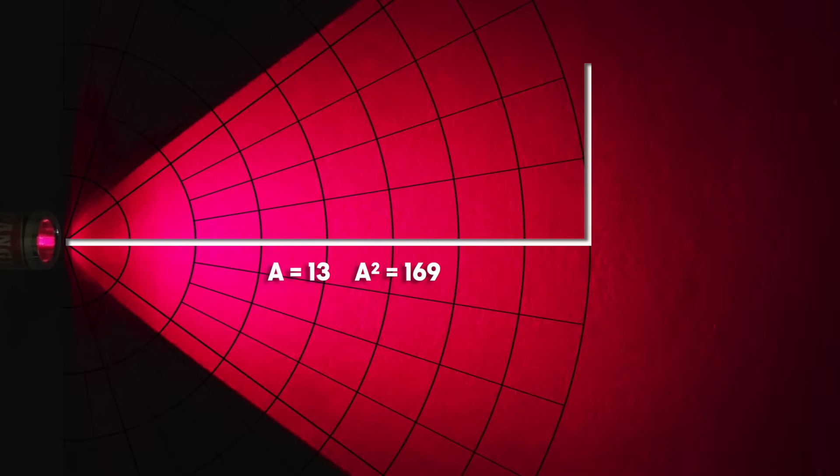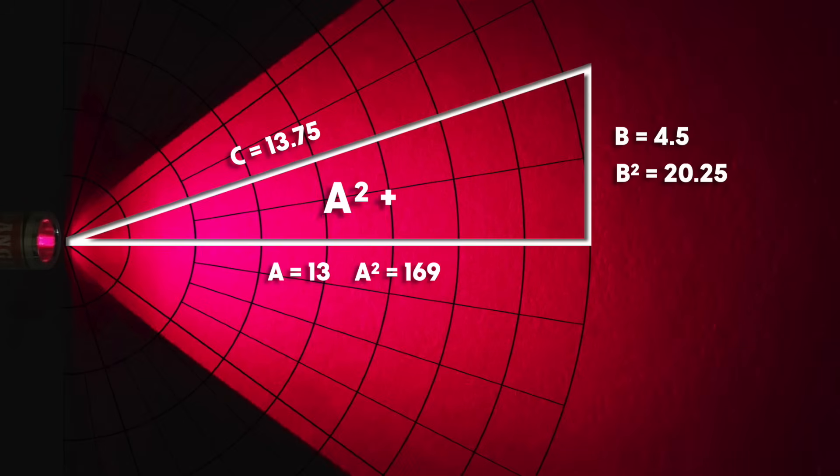The vertical line measures 4.5cm. I will call it B. And B squared equals 20.25cm. The connecting line measures 13.75cm. Using the formula A squared plus B squared equals C squared, the result is approximately 13.75cm for C. The calculation and the measurement for C are within experimental error.